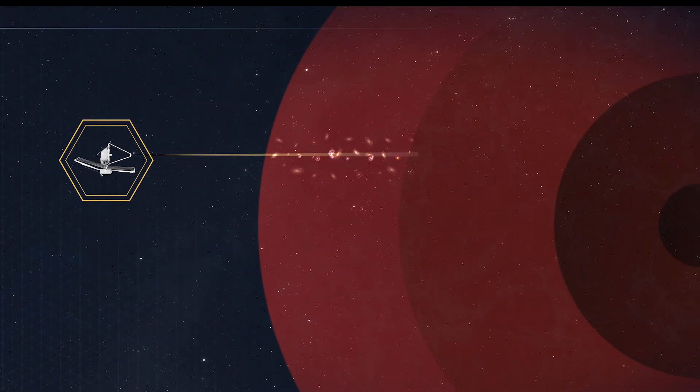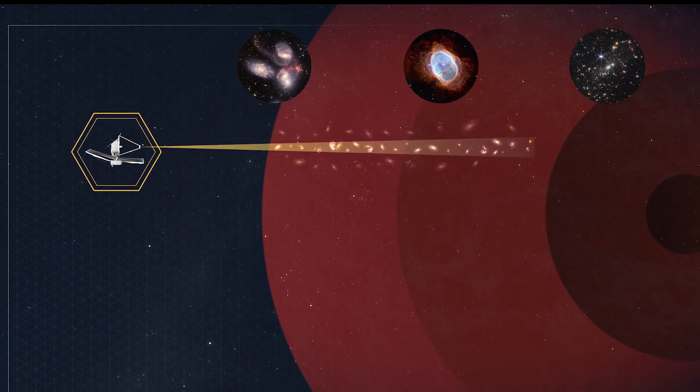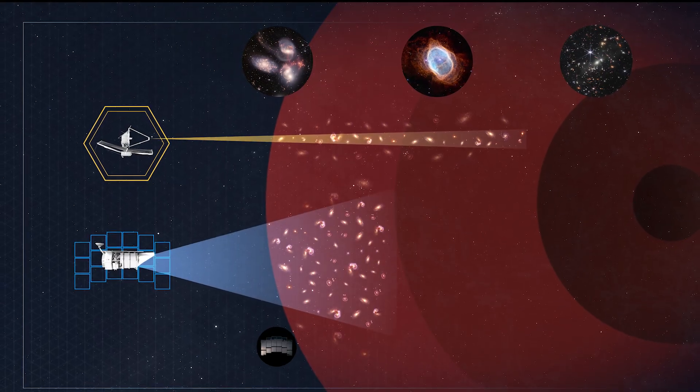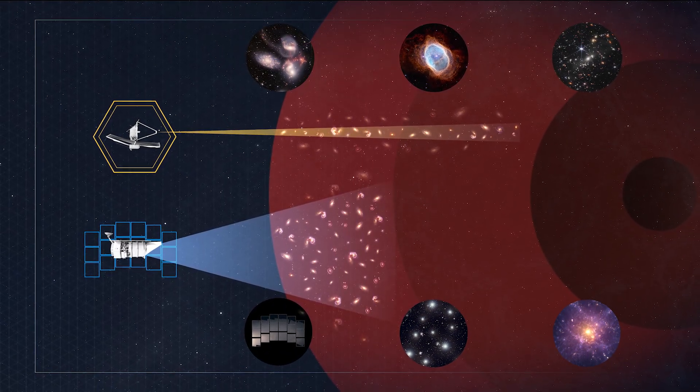Webb has the exquisite sensitivity and wavelength range to capture detailed images deeper into the universe than ever before. Roman has an incredibly wide field of view to rapidly survey huge areas of sky, while still rivaling Hubble and Webb's resolving power.